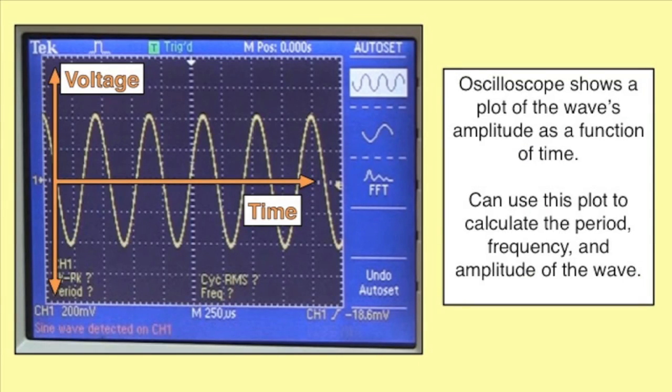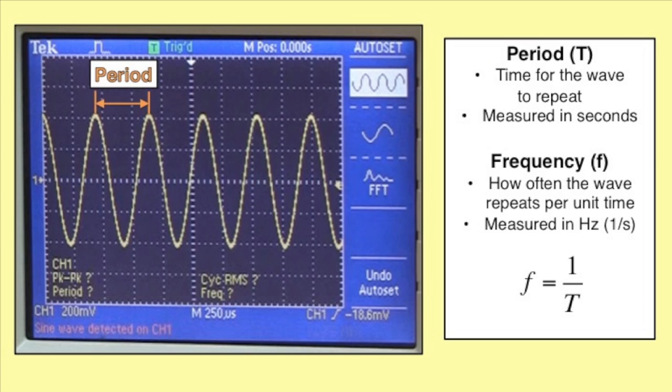You will use an oscilloscope to study oscillations. The oscilloscope shows a plot of the voltage as a function of time. The period is the time it takes for the wave to repeat and is measured in seconds. The frequency is how often the wave repeats per unit time and is measured in hertz or one over seconds. Frequency is equal to one divided by the period.